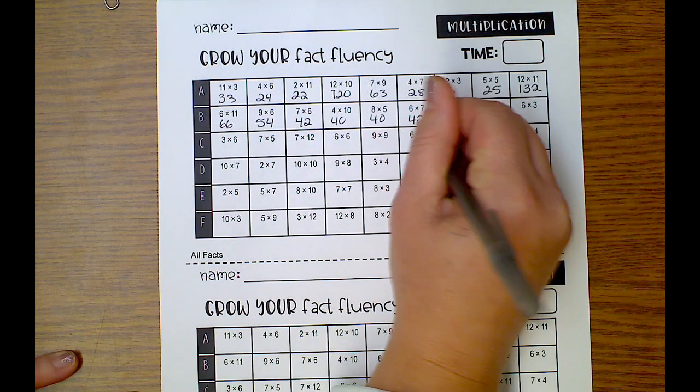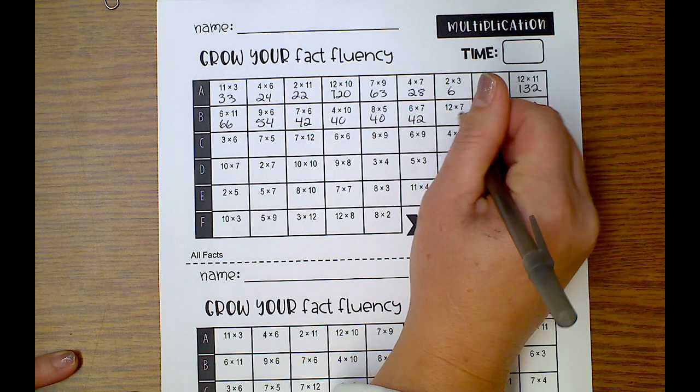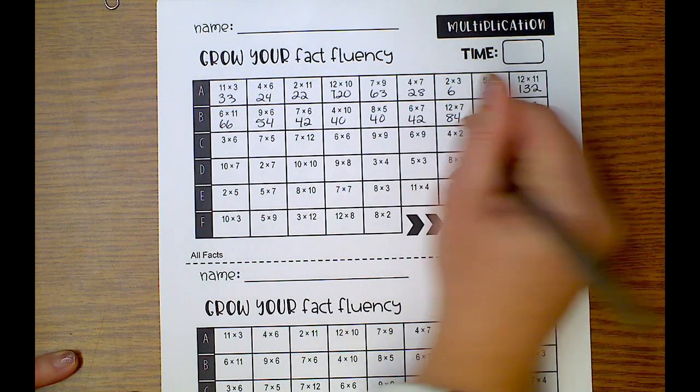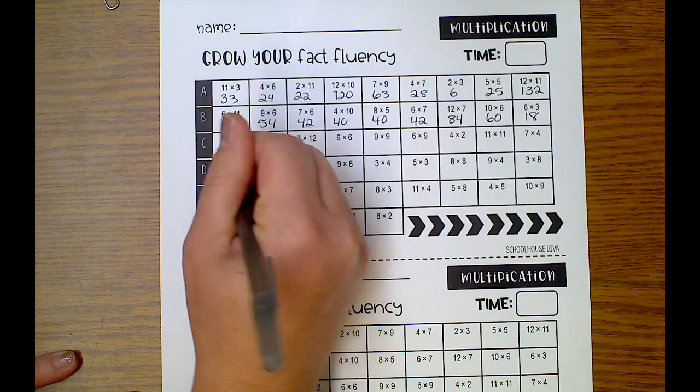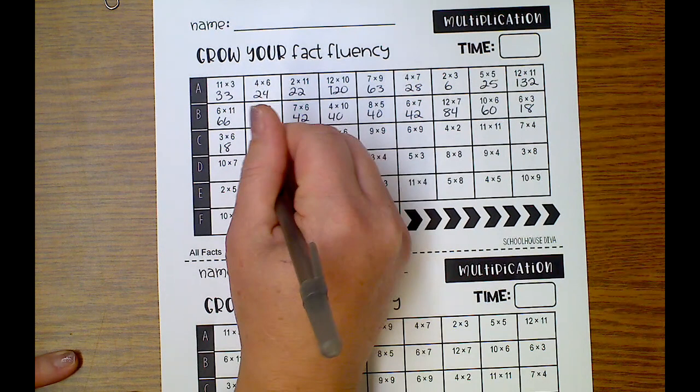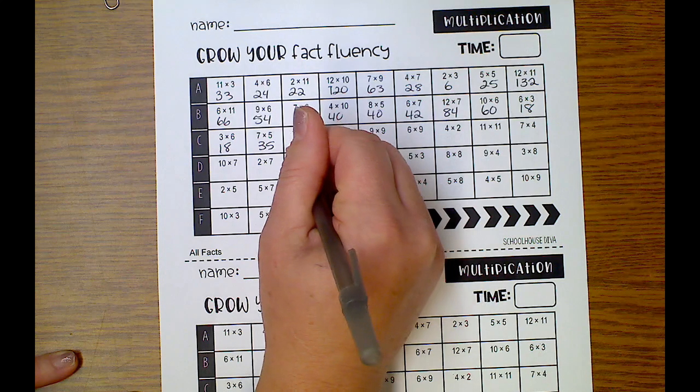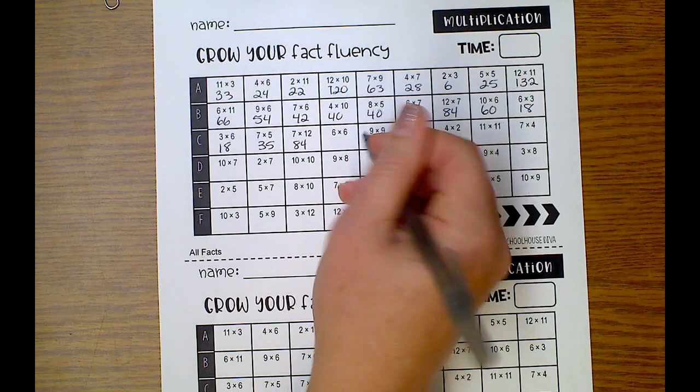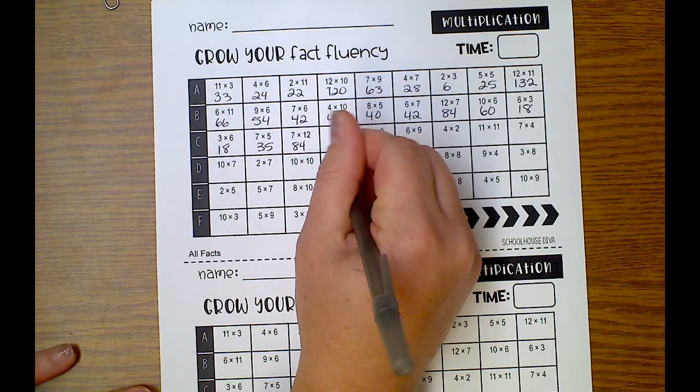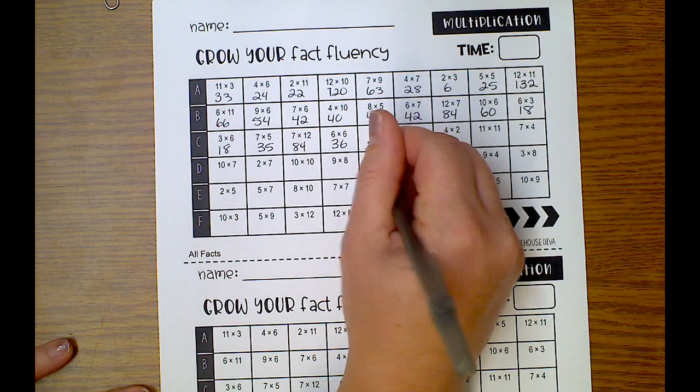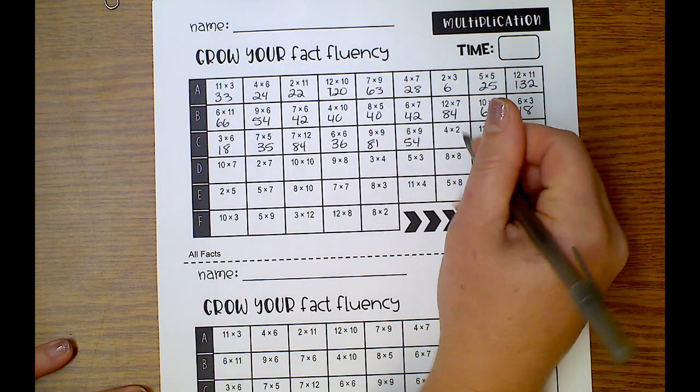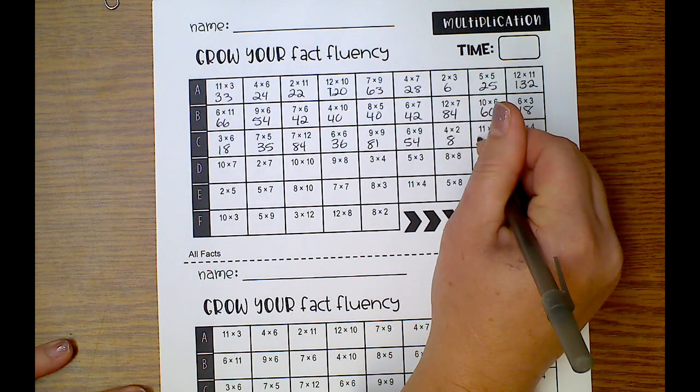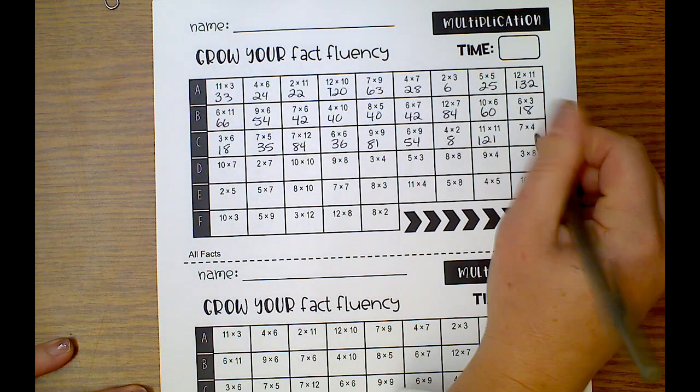is 42, 7 times 12 is 84, 10 times 6 is 60, 6 times 3 is 18, 3 times 6 is 18, 7 times 5 is 35, 7 times 12 is 84, 6 times 6 is 36, 9 times 9 is 81, 6 times 9 is 54, 4 times 2 is 8, 11 times 11 is 121, 7...